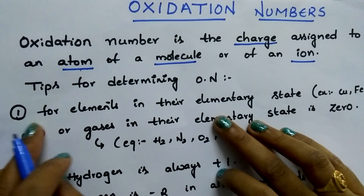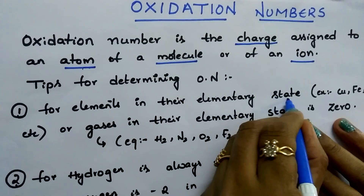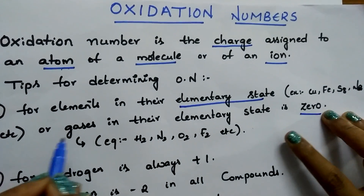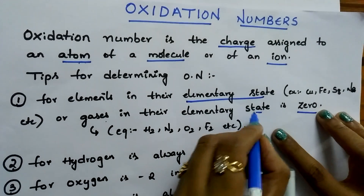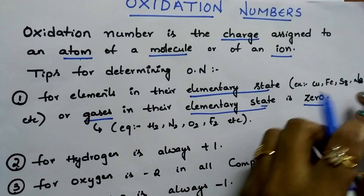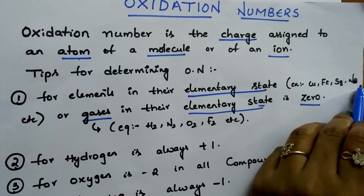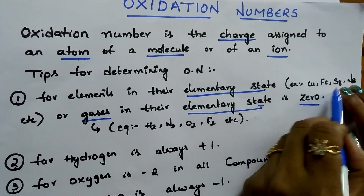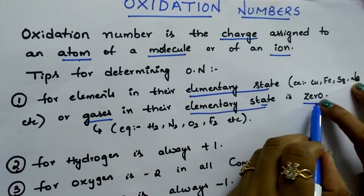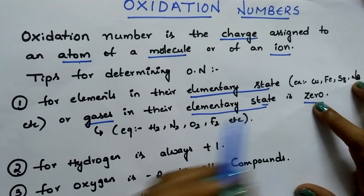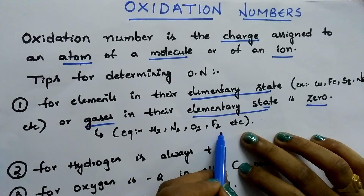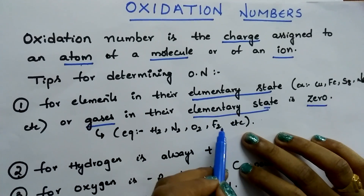Tip number 1. For elements in their elementary state, oxidation number is 0. For gases in their elementary state, oxidation number is 0. Let us see the examples. Copper, iron, sulfur, sodium — these are the elements. In their elementary state, meaning natural existence, their oxidation state is 0. And gases like hydrogen, nitrogen, oxygen, fluorine — the oxidation state is 0.